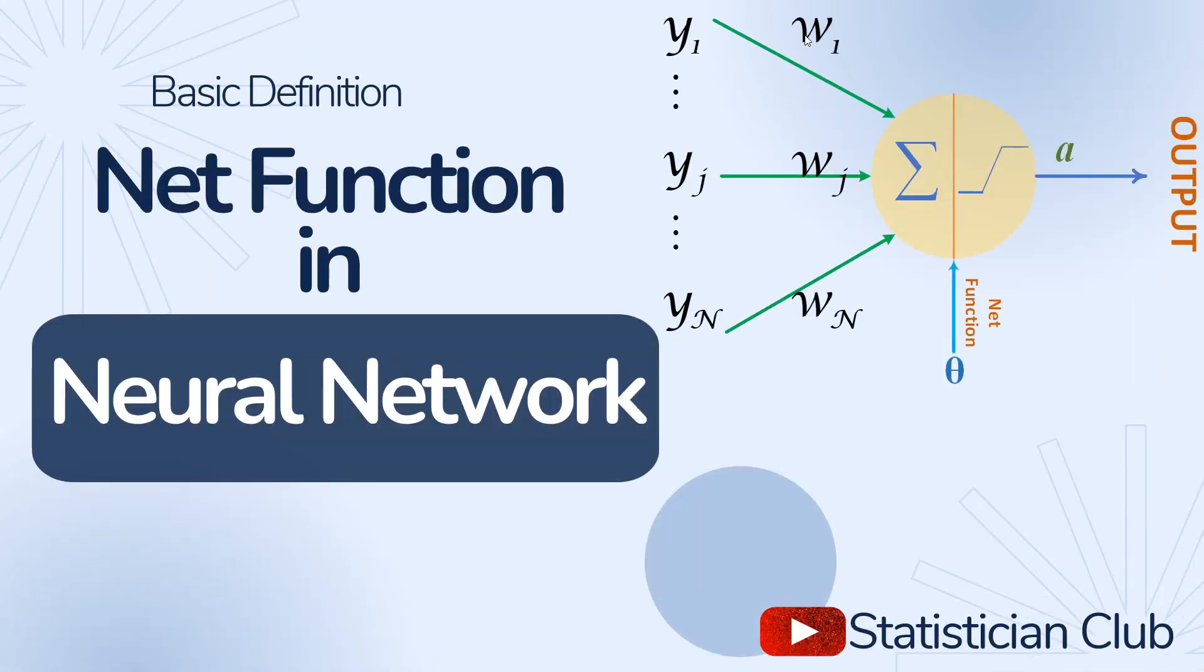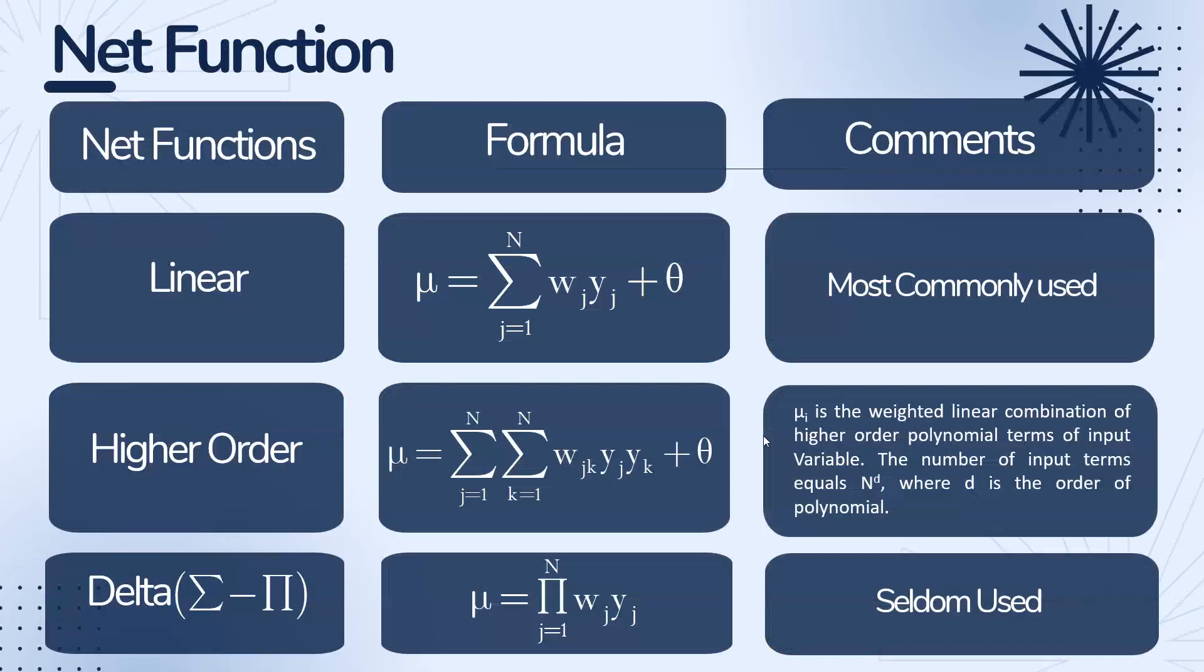From the graph we can see this is the weight y1w1, y2w2, yjwj, and so on. And this sum shows we sum these terms y1w1 plus y2w2 and so on yjwj plus this theta. Finally add this theta which is the bias. You can see my video on neural network basic concept.